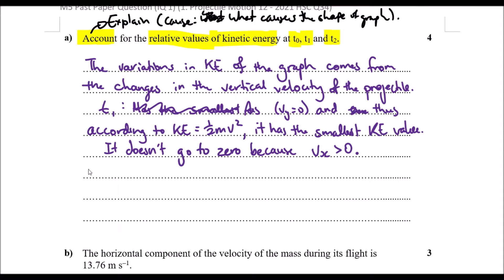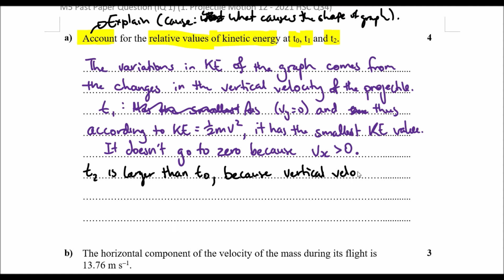The vertical velocity at t2 is larger than at t0. We know this because the horizontal velocity is constant, so the difference must come from the vertical component. Since ux is constant throughout, that part of the KE stays the same.